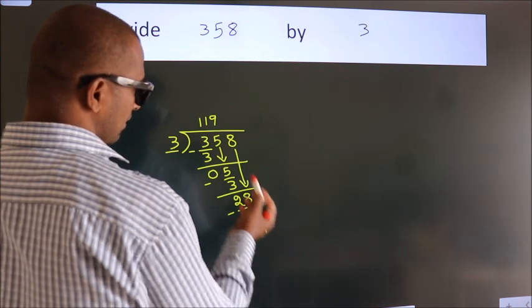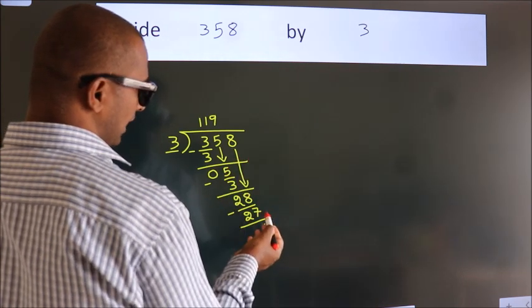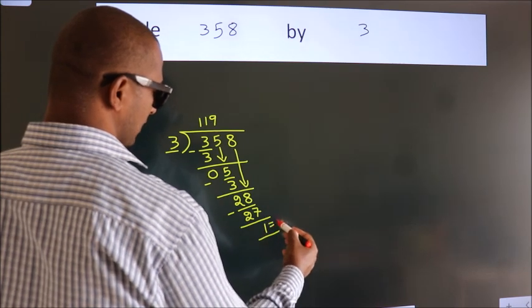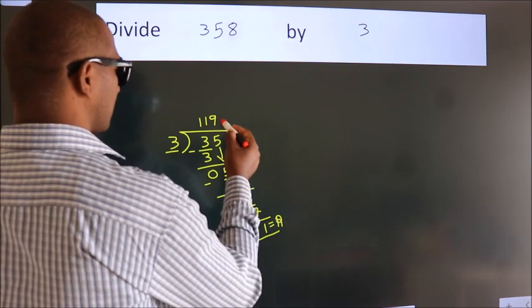After this, no more numbers to bring down. So we stop here. This is our remainder. This is our quotient.